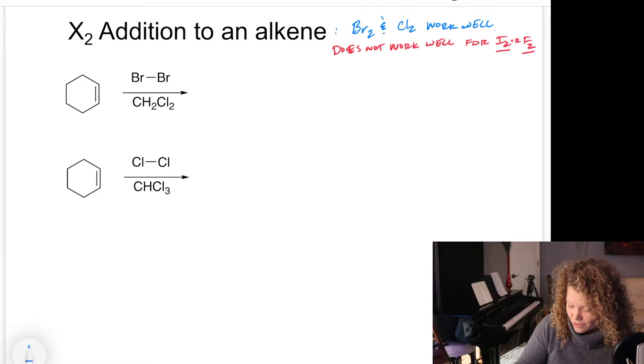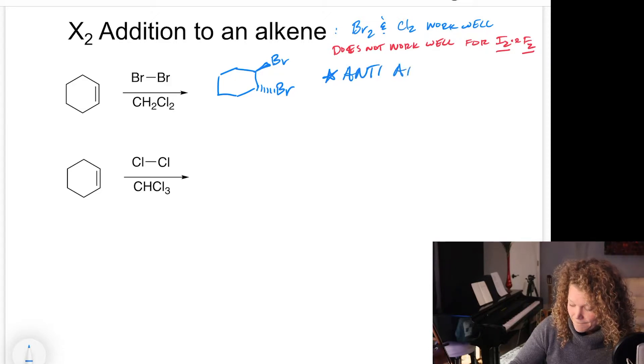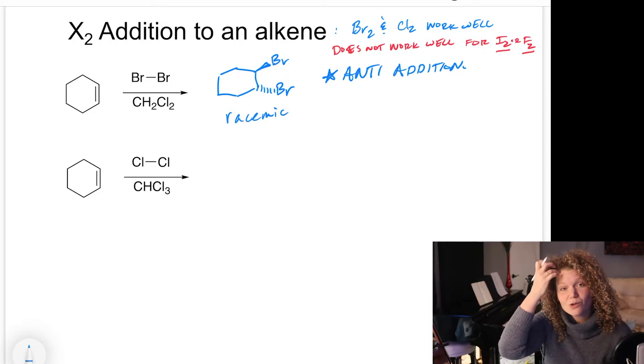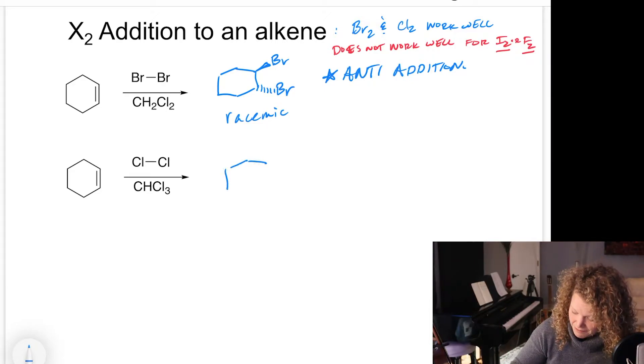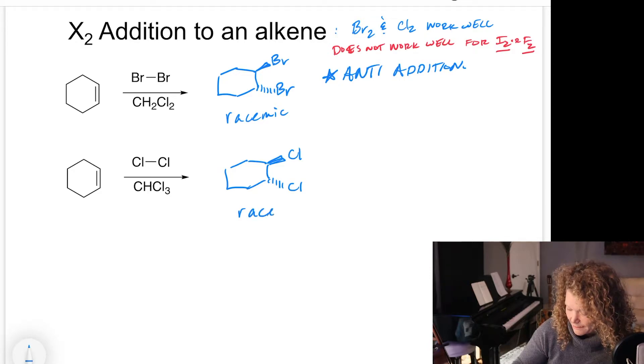We have an alkene and Br2. What's going to happen is that the two bromines here are going to add anti to each other. We're going to have a bromine coming forward and towards us and dashed going back. This orientation of anti is what we will be seeing. So this is anti-addition. And we can actually get the other enantiomer of this one as well. So the product here will be racemic.